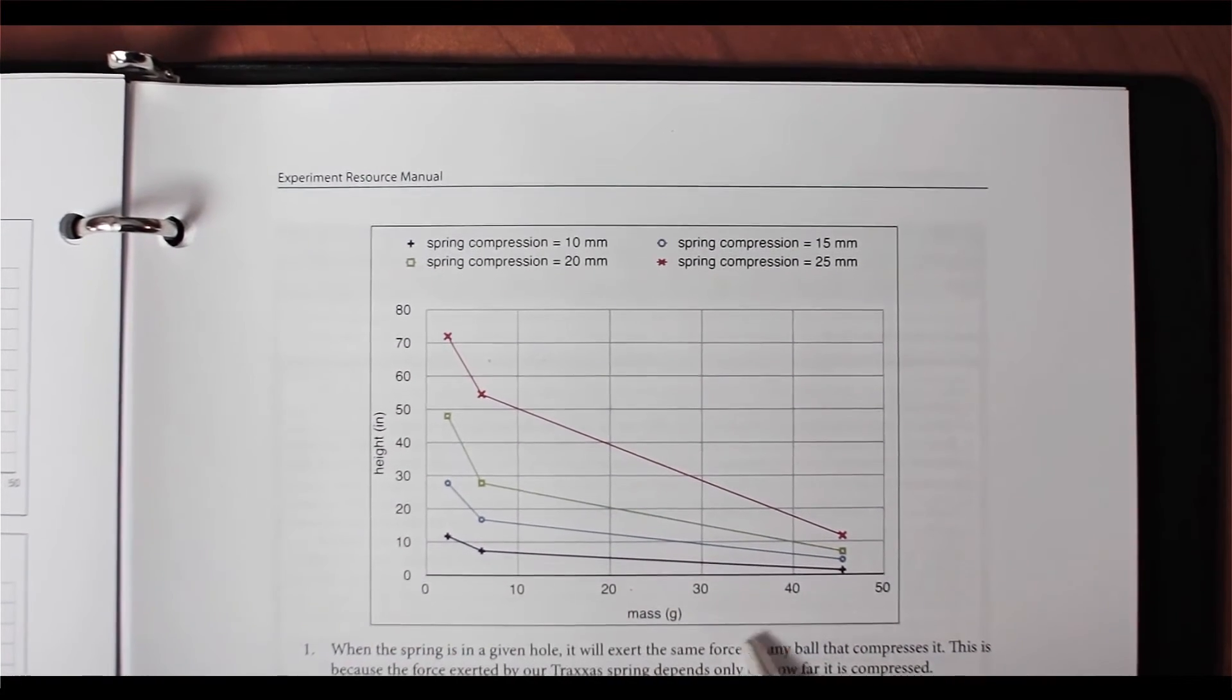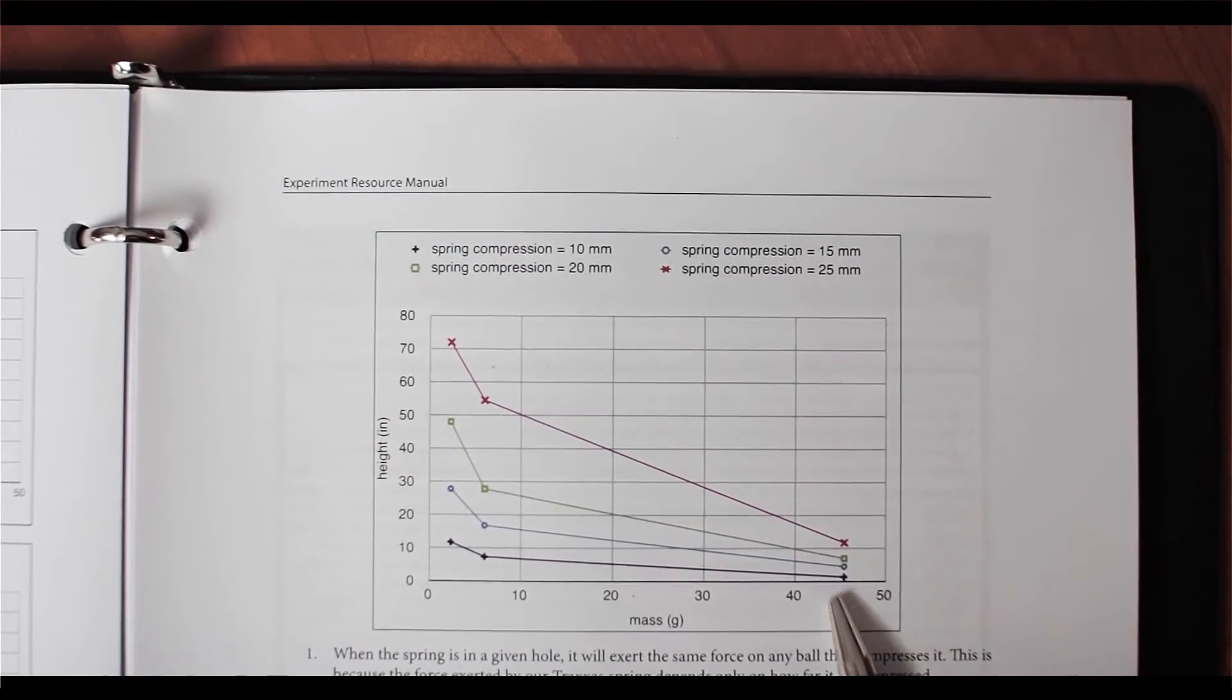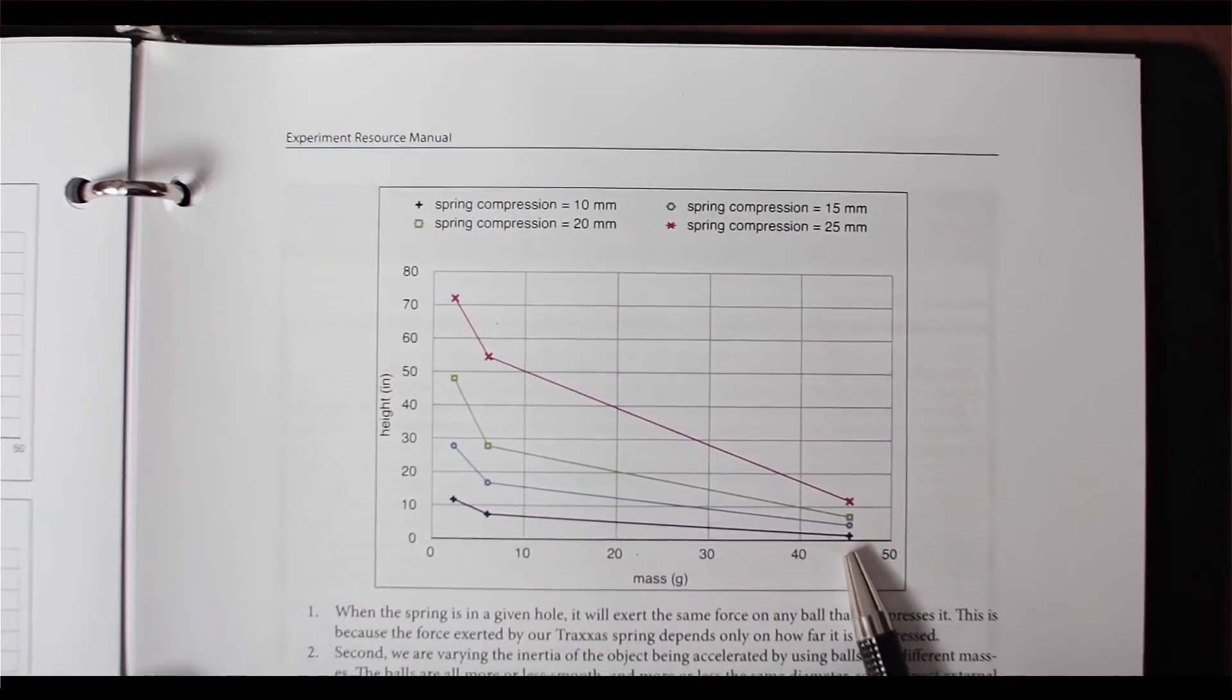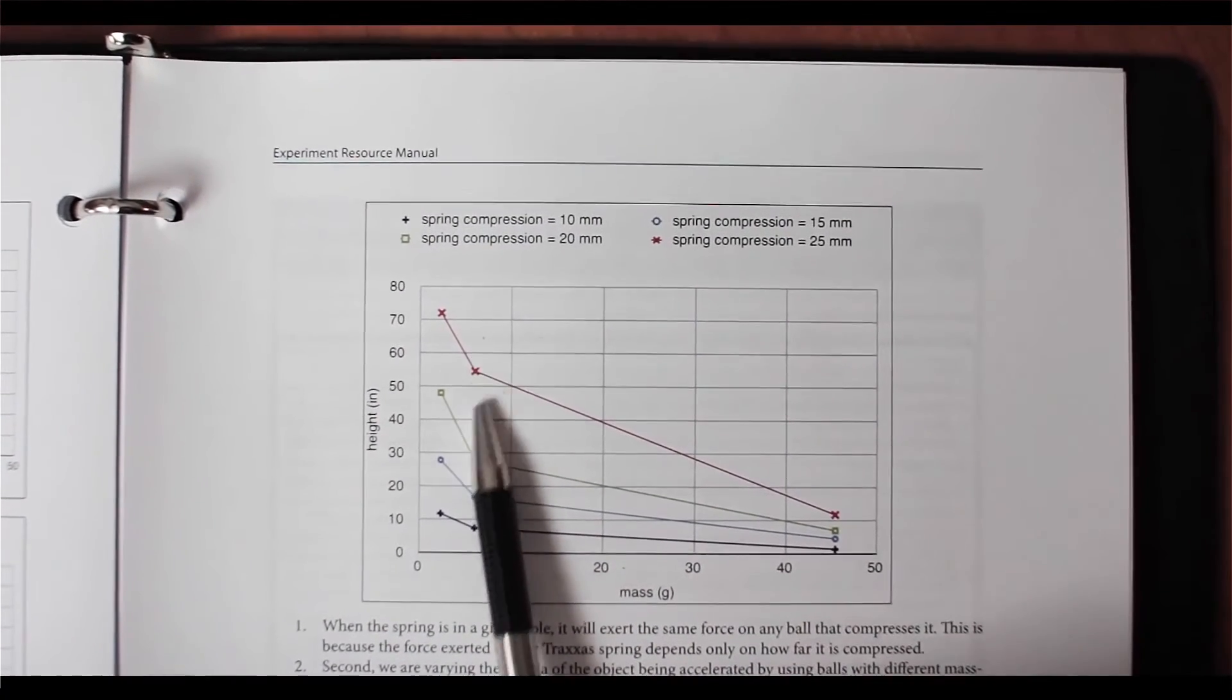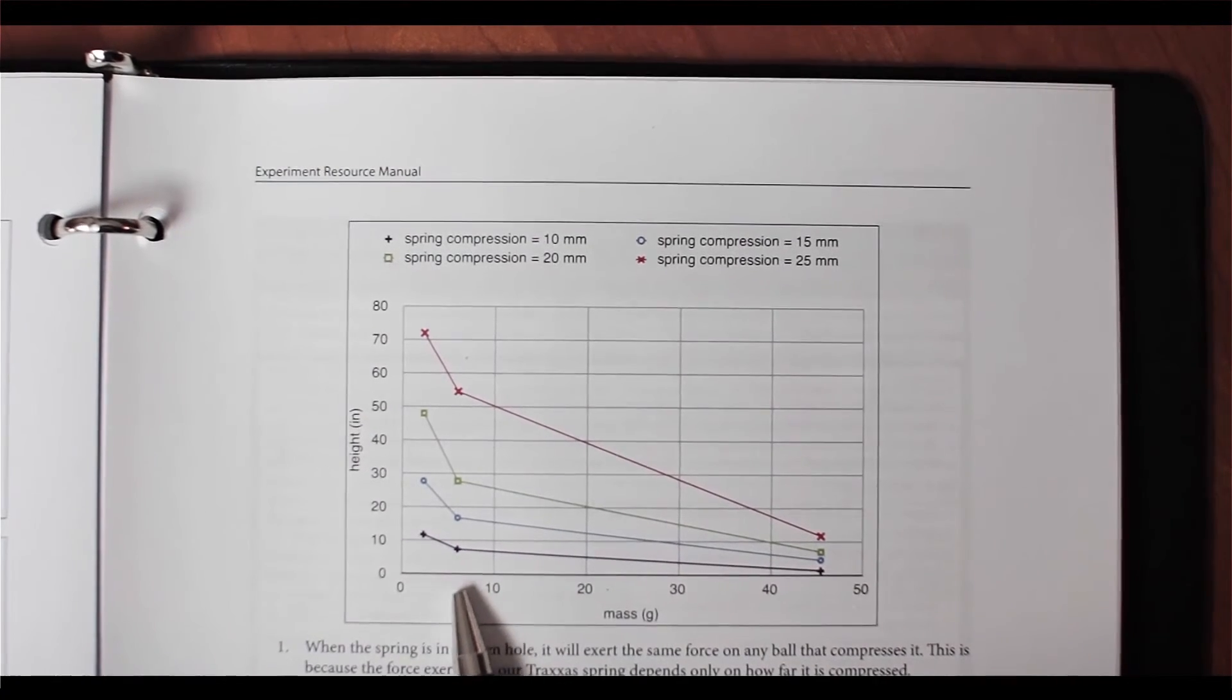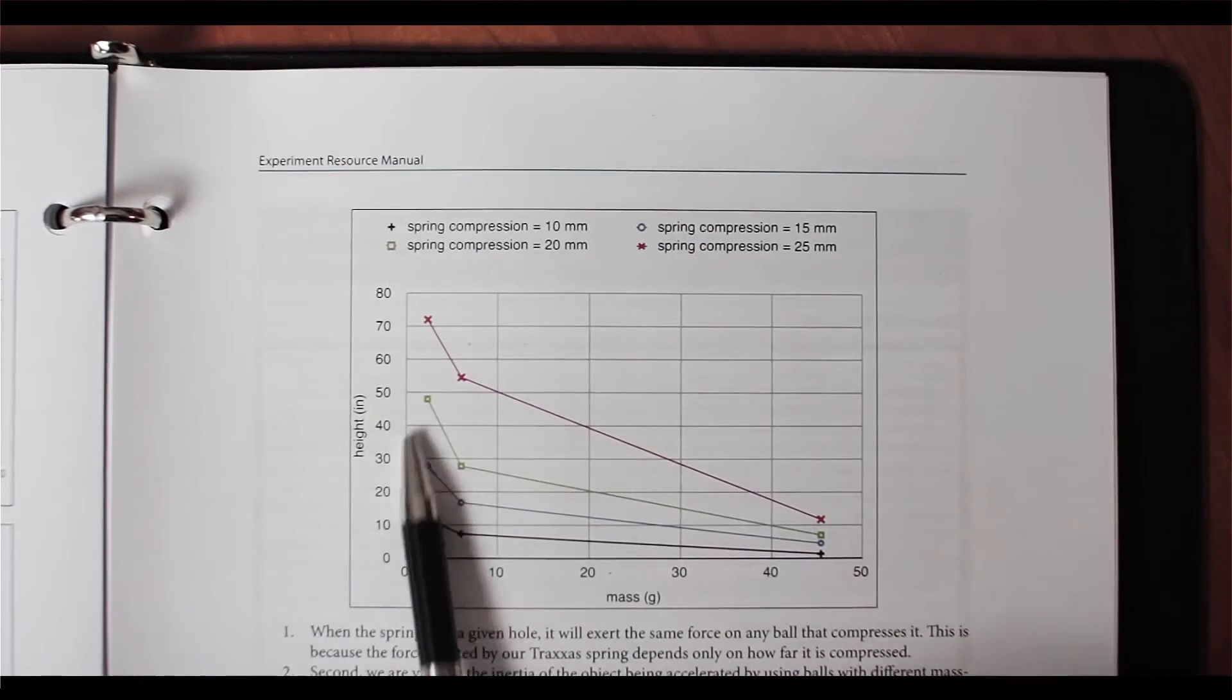The curve has the mass on the bottom for different balls. Here's all the 45-gram masses. Those were the golf balls. Here in the middle, we have all of the masses that were about seven grams. That's the wooden ball. And down here, around two grams, that's obviously the ping pong ball.